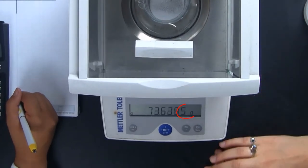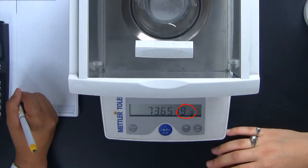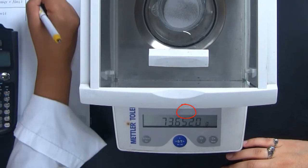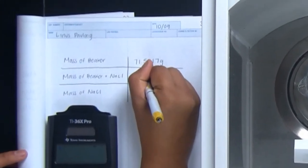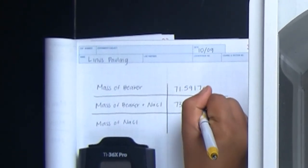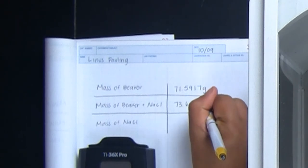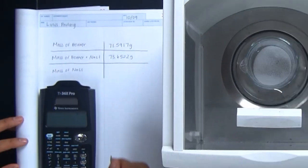She waits for a moment for the balance reading to settle down. Remember, the last digit is the uncertain digit. You may get some fluctuation in that digit, but that is normal. Choose the value that seems to be the most consistent.